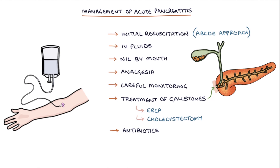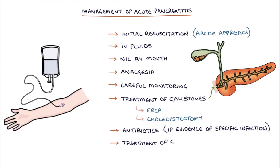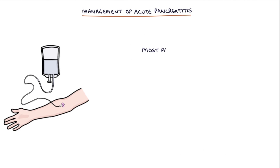Antibiotics may be used if there's evidence of a specific infection, for example an abscess or an infected necrotic area of the pancreas. Any complications should also be treated — for example, a large fluid collection that develops can be drained either by an endoscopic or a percutaneous procedure. Most patients will improve within 3–7 days when they present with acute pancreatitis and receive proper treatment.